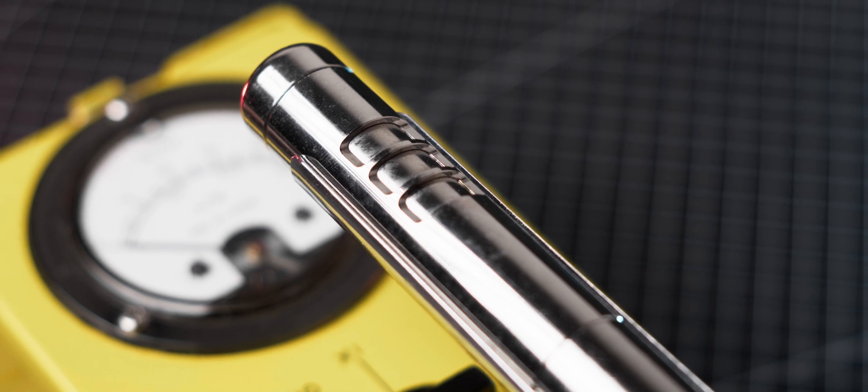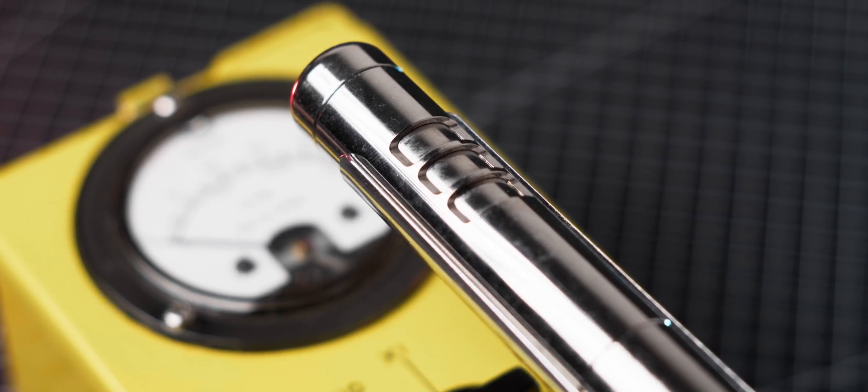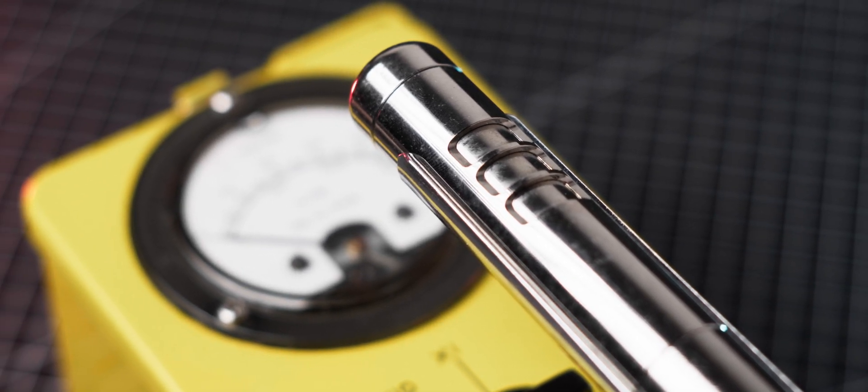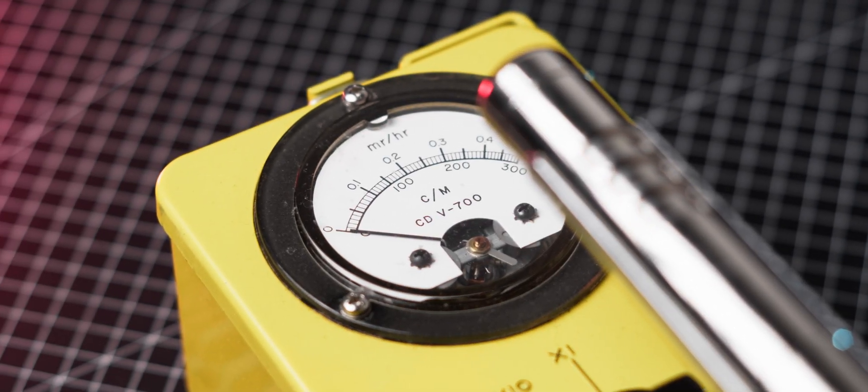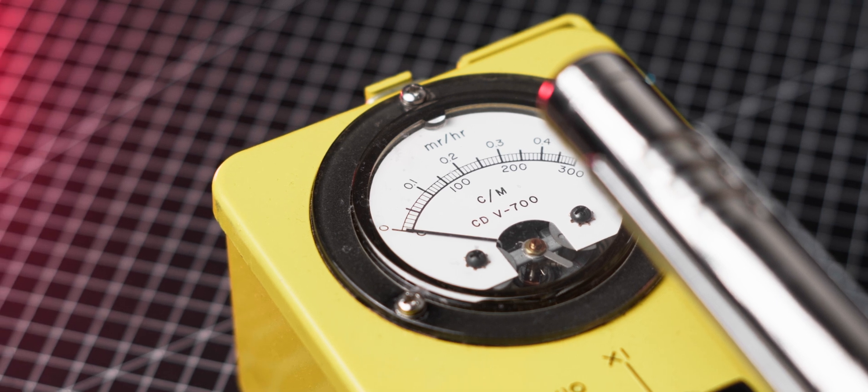Some Geiger-Müller tubes are gamma compensated and will show more accurate results even when used to measure isotopes outside of their original calibration source, such as the case with a CDV-700 Geiger counter.